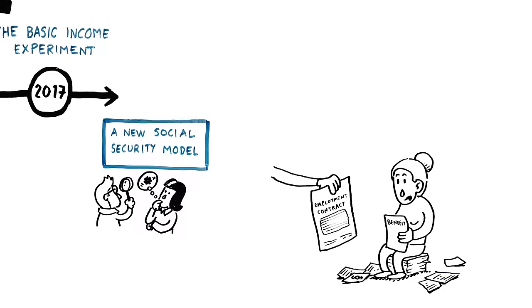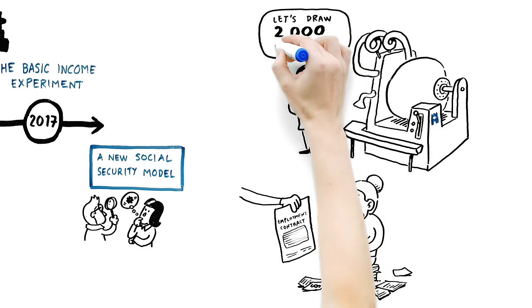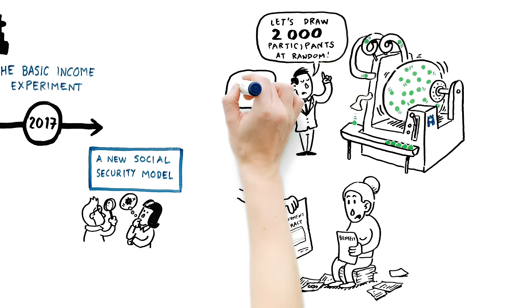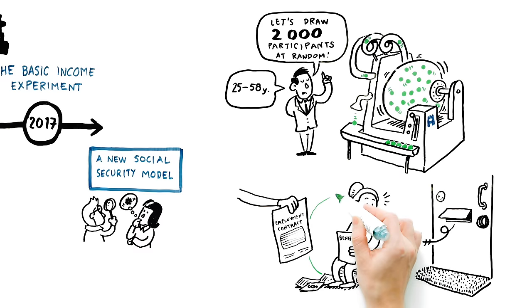2,000 random participants were chosen for the Basic Income Experiment from among unemployed persons between the ages of 25 and 58. Kela has notified the participants of their selection, and individual citizens are not eligible to apply for basic income outside of this experimental group.